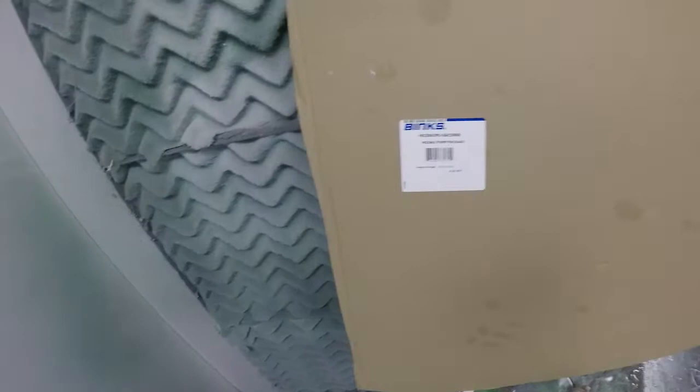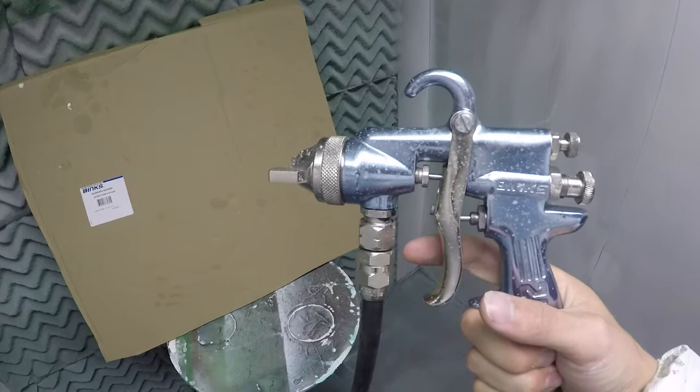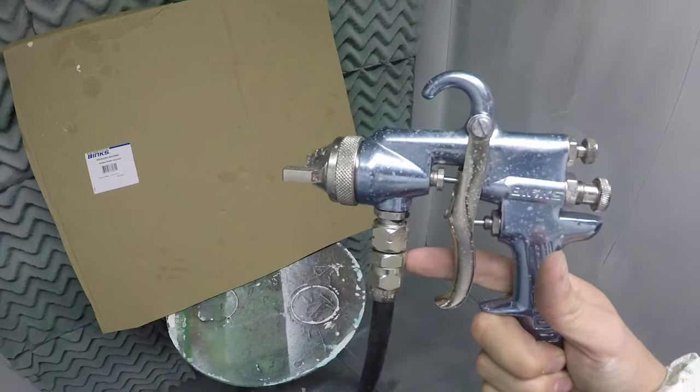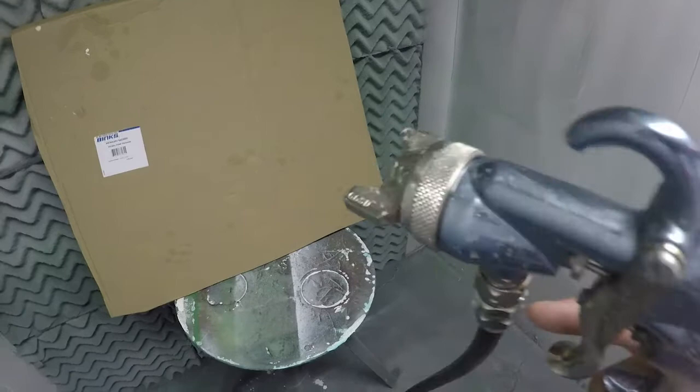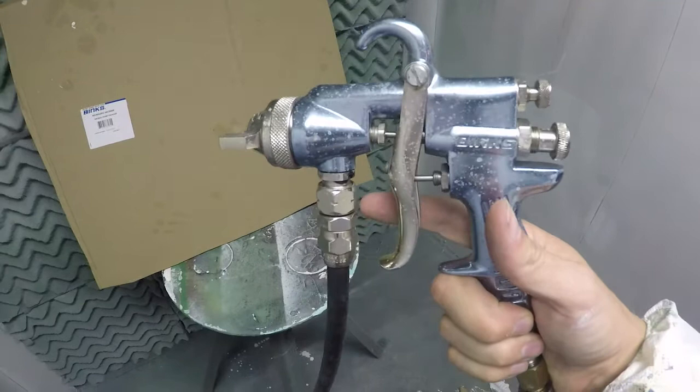All right, so first up is the 2100 gun. As we mentioned, it's capable of spraying material anywhere from zinc to general industrial primers to top coats. One nice thing about this gun, with a smaller air cap like a 66 SD air cap, which is actually what we have on there, only consumes about 7 CFM at 30 pounds of pressure.